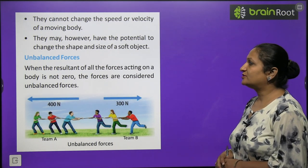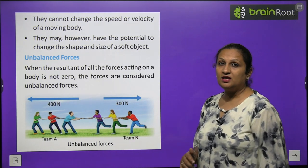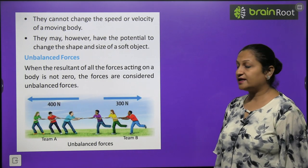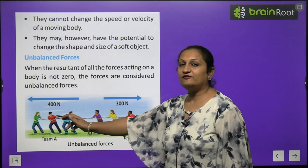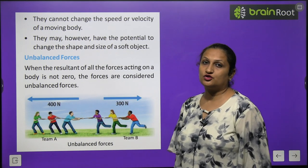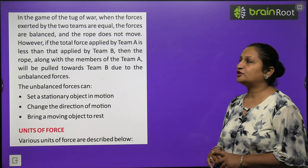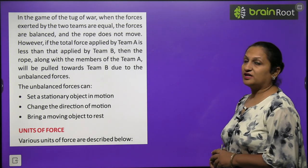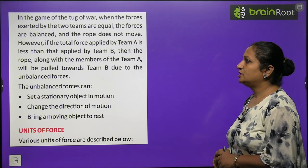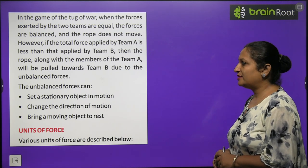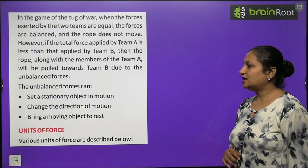Unbalanced force: when the resultant force acting on the body is not zero. For example, in a tug of war, if Team A applies 400 Newton and Team B applies 300 Newton, the rope moves towards Team A. The resultant force is not zero, so this is an unbalanced force. Unbalanced force can bring a stationary object into motion, change the direction of motion, and bring a moving object to rest.